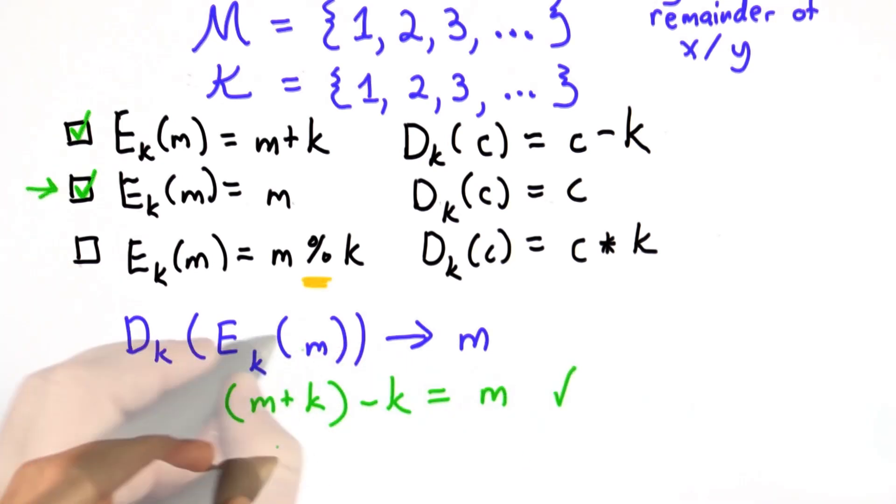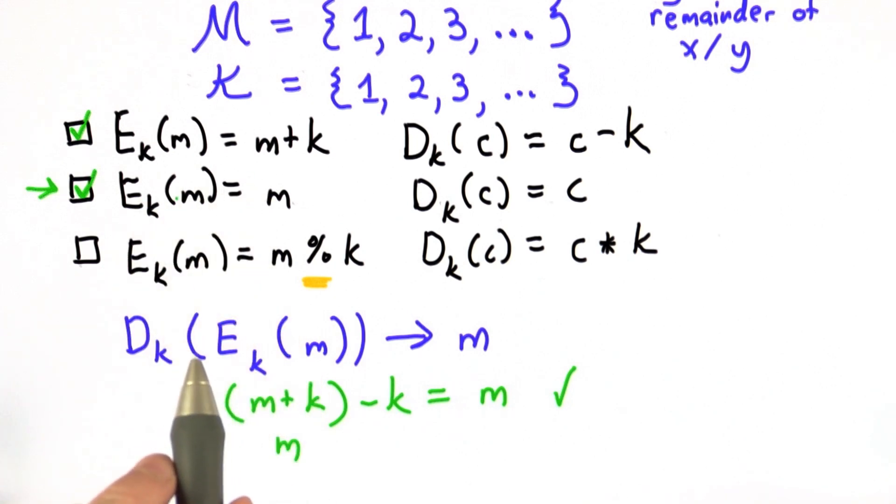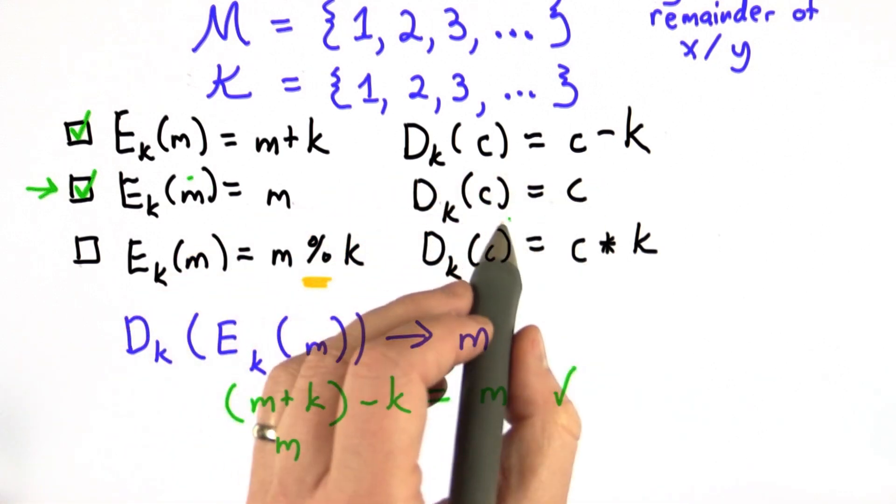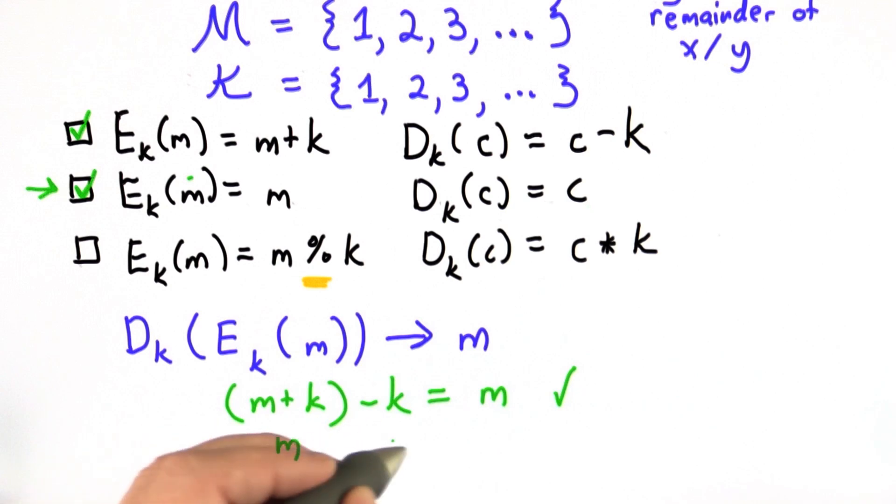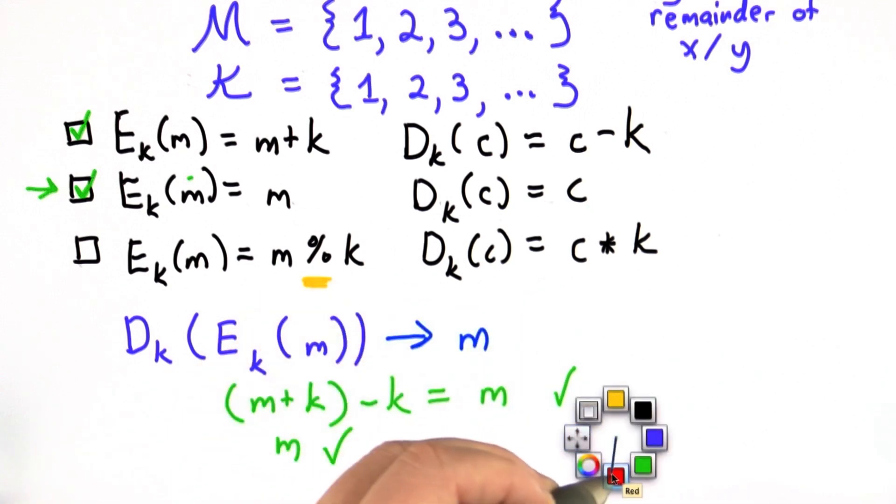For the second choice, the encryption function is the identity. That gives us m back. Certainly this does not provide the security properties that we need. We haven't hidden anything about the message. And then the decryption function is also the identity. It takes in m, gives us m back. So this satisfies correctness, certainly does not satisfy security.